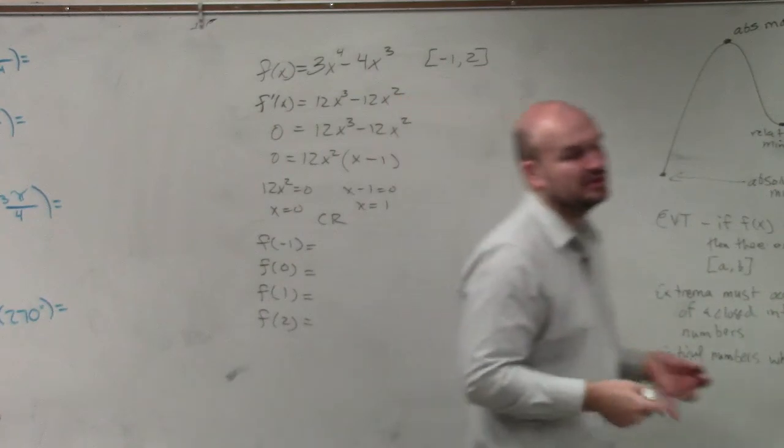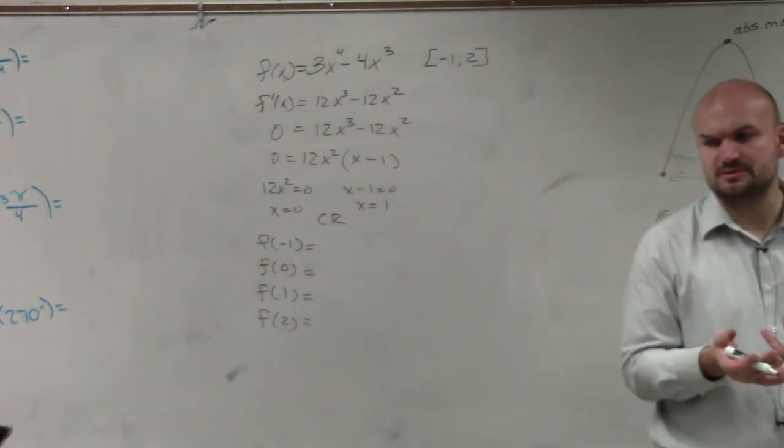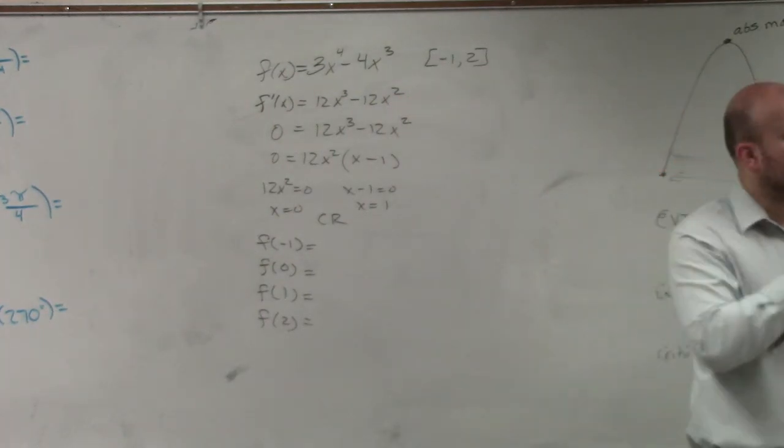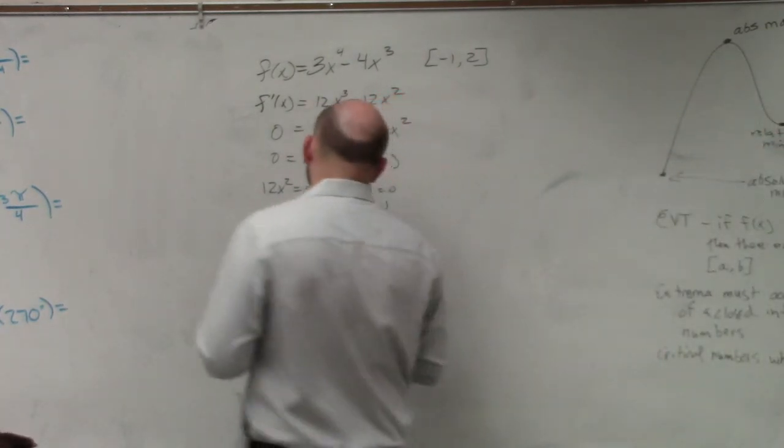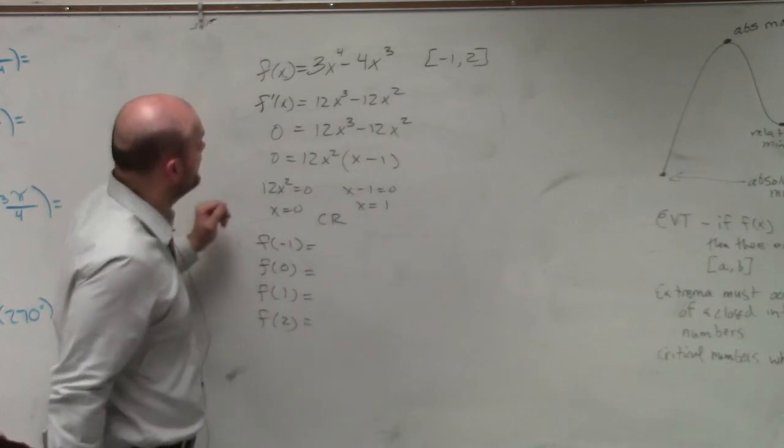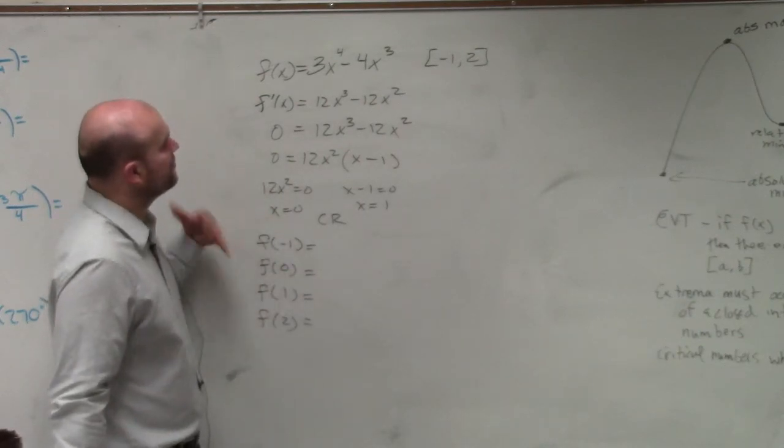Remember, ladies and gentlemen, for our extrema to occur, it has to either be at our endpoints or at our critical numbers. So just doing this math in my head. So this would be negative 1 to the fourth power is 1. 3 times 1 is 3.